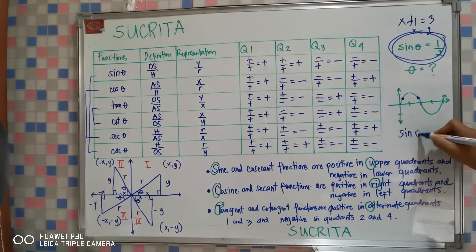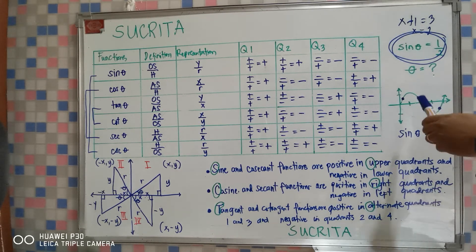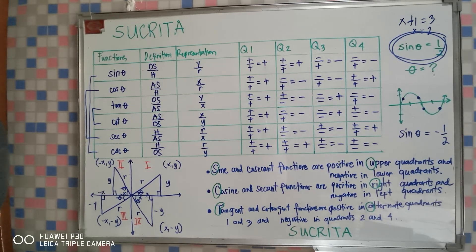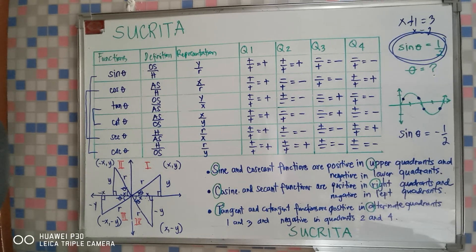Suppose I give you sin θ = −1/2. The sine function is negative in the lower quadrants, which are quadrants 3 and 4. To understand better how important Sukrita is in trigonometric equations — with angles 0°, 90°, 180°, 270°, and 360° — just view the next video on trigonometric equations. Thank you very much. Remember, math is easy to learn when one learns with enthusiasm. Bye!